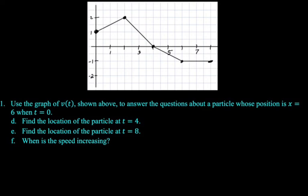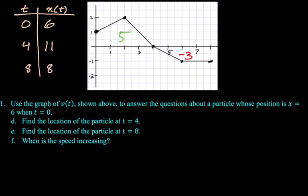So the next problems that we want to answer, find the location at t equals 4 and the location at t equals 8. We just did that in our table. So I'm just going to copy over the table. We can see from the table the position at 4 is 11 and the position at 8 is 8. You write the problems. You don't read them while you're writing them.